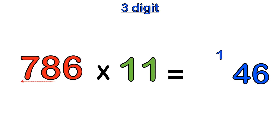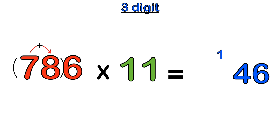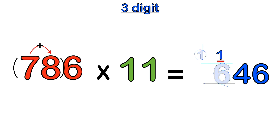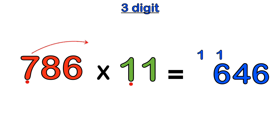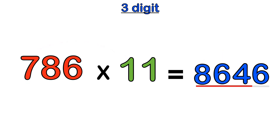Then we move one space to the left and add seven plus eight, which gives us 15. Adding the carried one gives us 16. We move one space to the left again — we've reached the beginning of our number. We multiply the first digit, seven, by the first one in 11, and adding the carried one gives us eight. So the answer is 8,646.